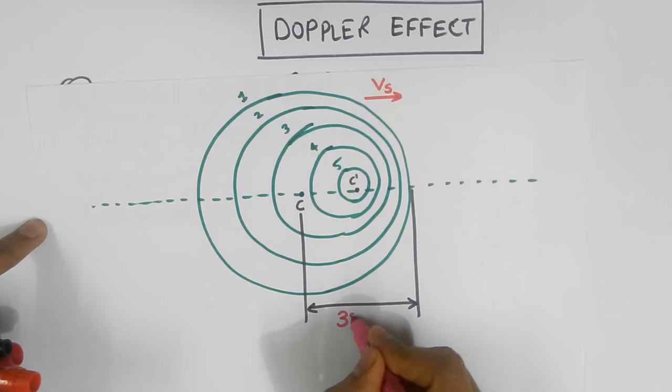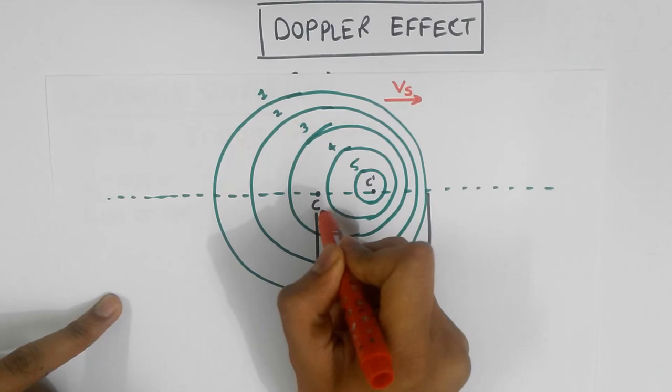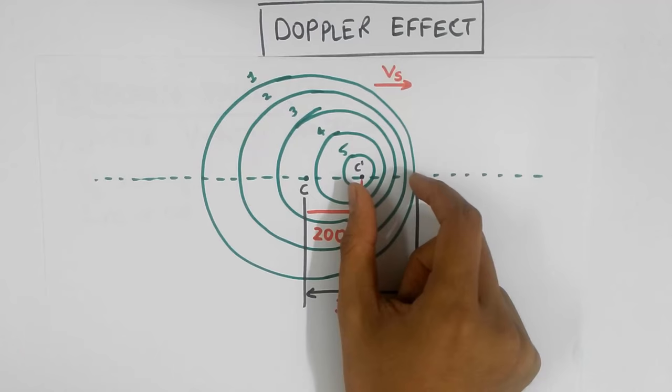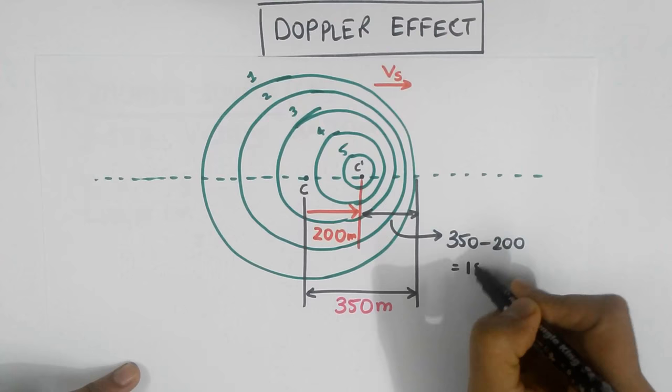Hence, this distance traveled by the source in one second must be 200 meters, right? So now you can see that the 5 waves are squeezed in this tiny distance of 350 minus 200 equals 150 meters. So how much space would just one wave take now?